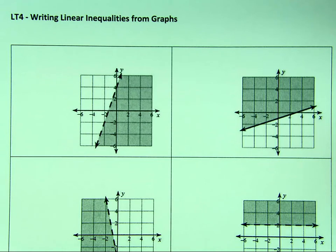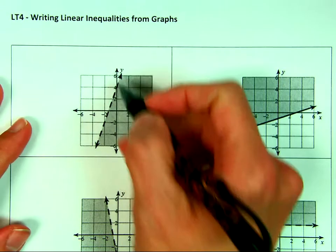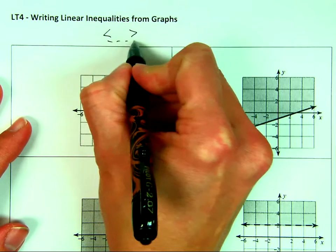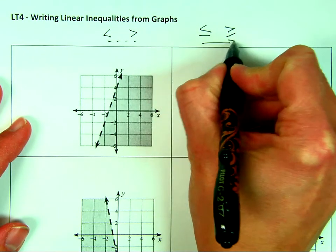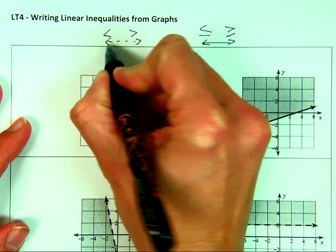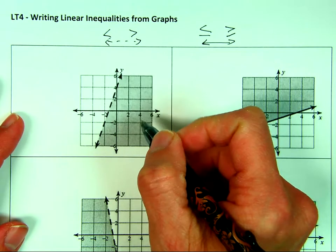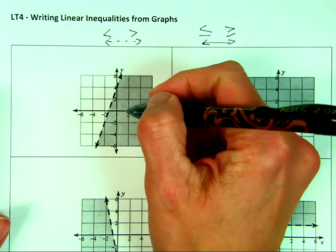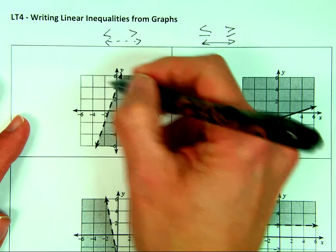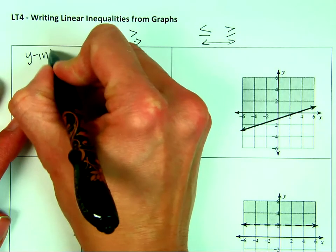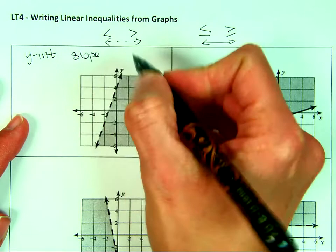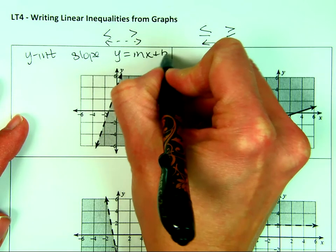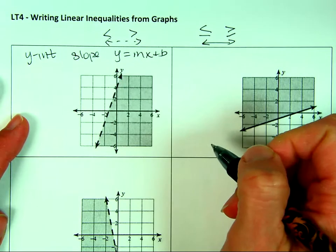So let's remember all those things. A dashed line would mean it's either less than or greater than. If we have a less than or equal to or greater than or equal to, that's where we get the solid line. We want to remember from graphing that we want a y-intercept. Graphing in slope-intercept form is going to be the easiest one. So we're going to get a y-intercept and a slope. So those are the two things that will help us because then we can write y equals mx plus b.